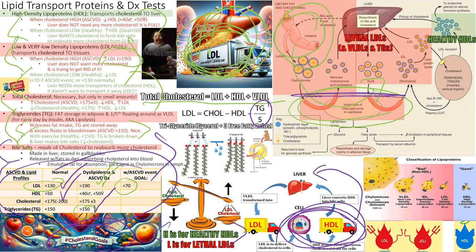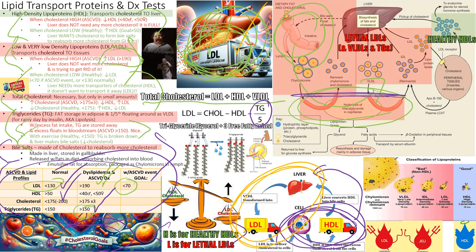To raise HDL, we need to reduce overall cholesterol so the liver 'thinks' it's low and produces more HDL. LDLs take cholesterol from the liver and dump it in the periphery — the vasculature. That's the overflow mechanism underlying ASCVD. VLDLs also contribute by transporting cholesterol to tissues.